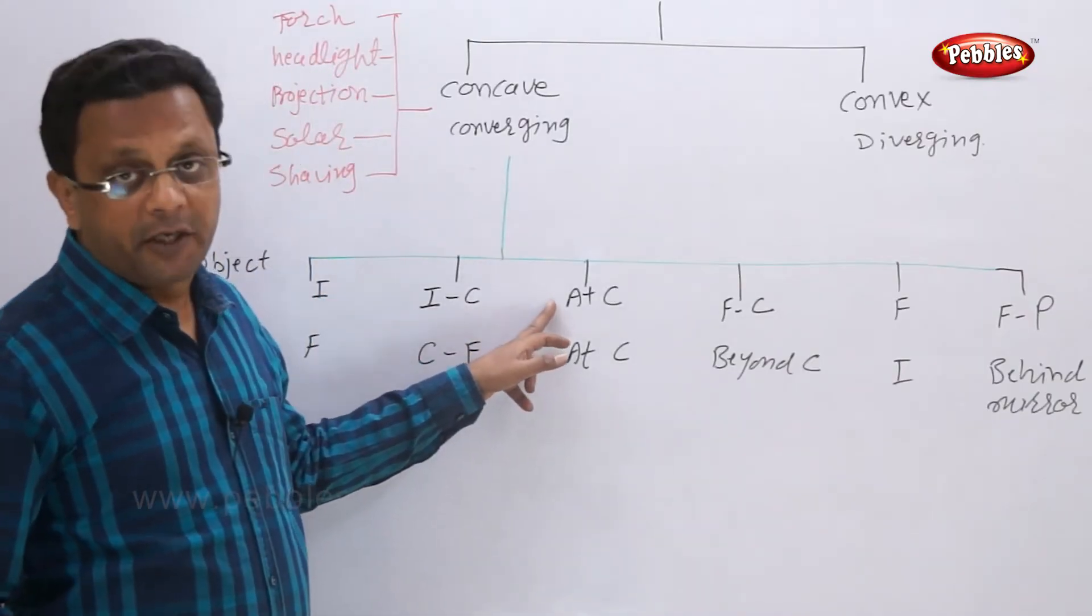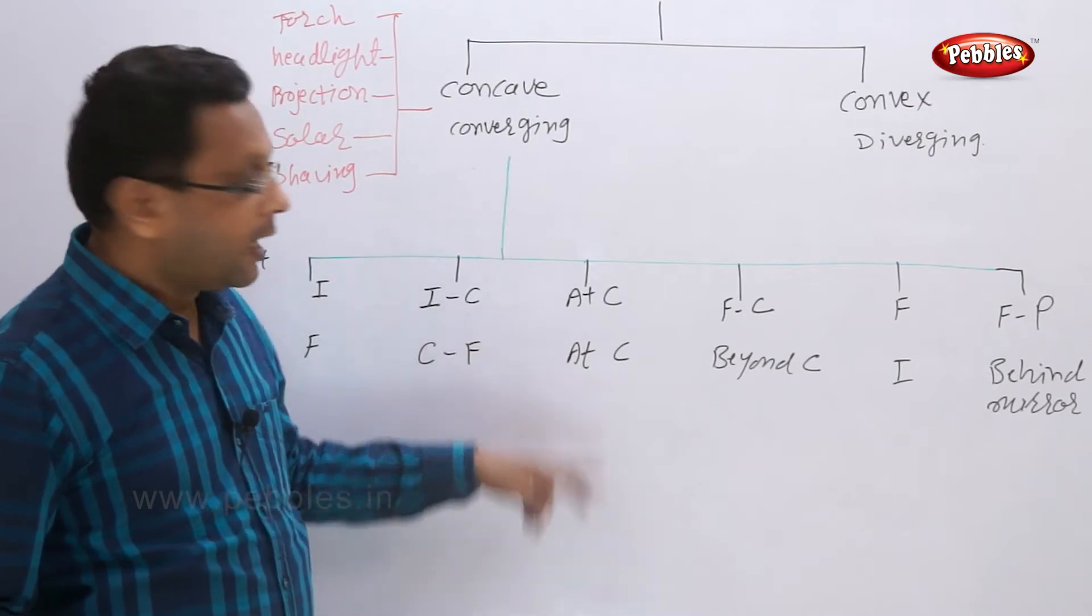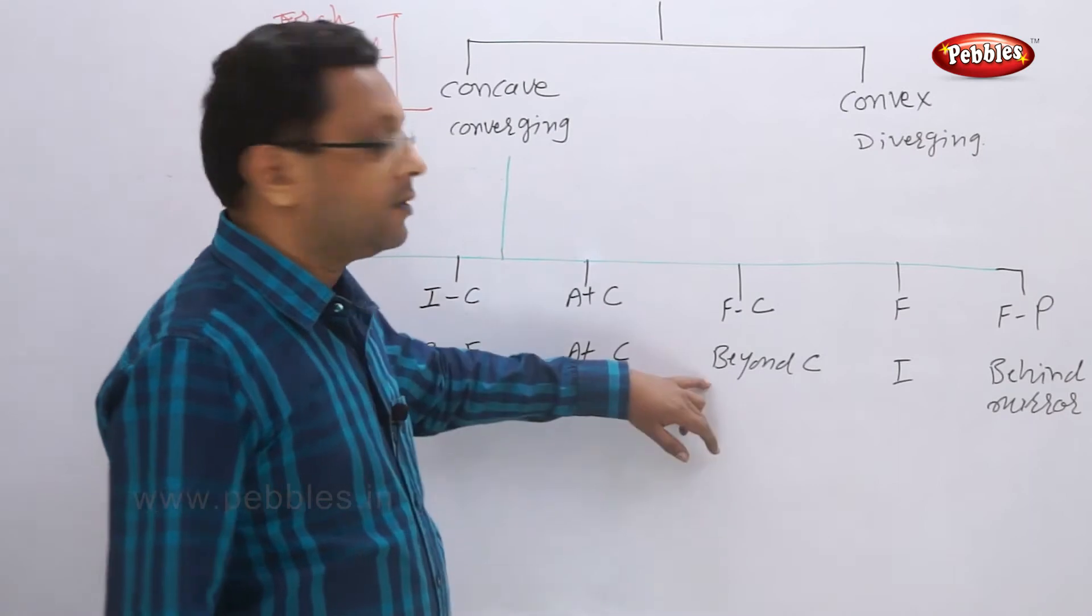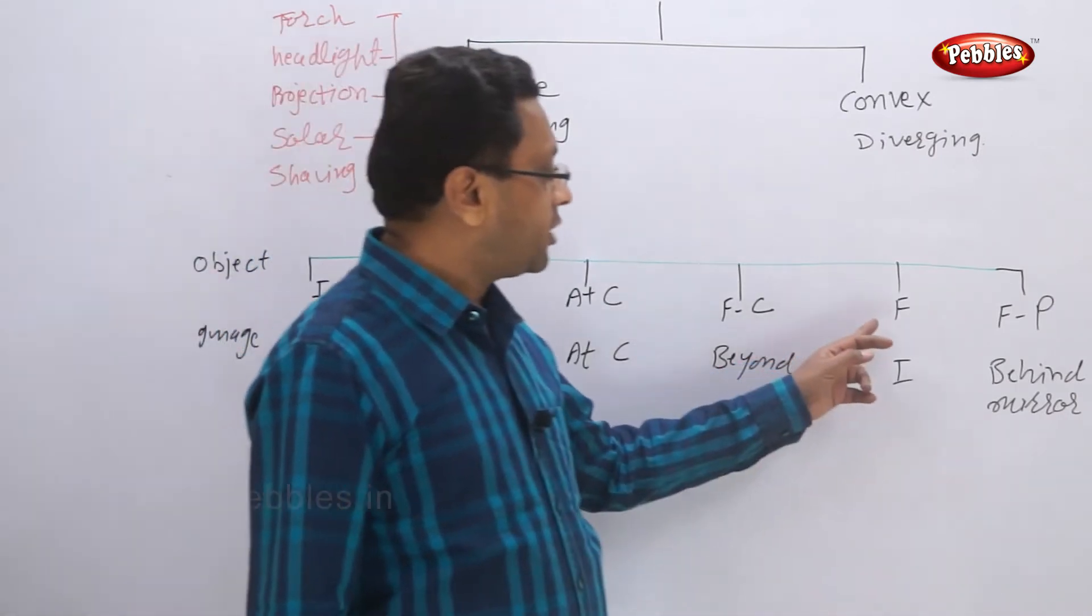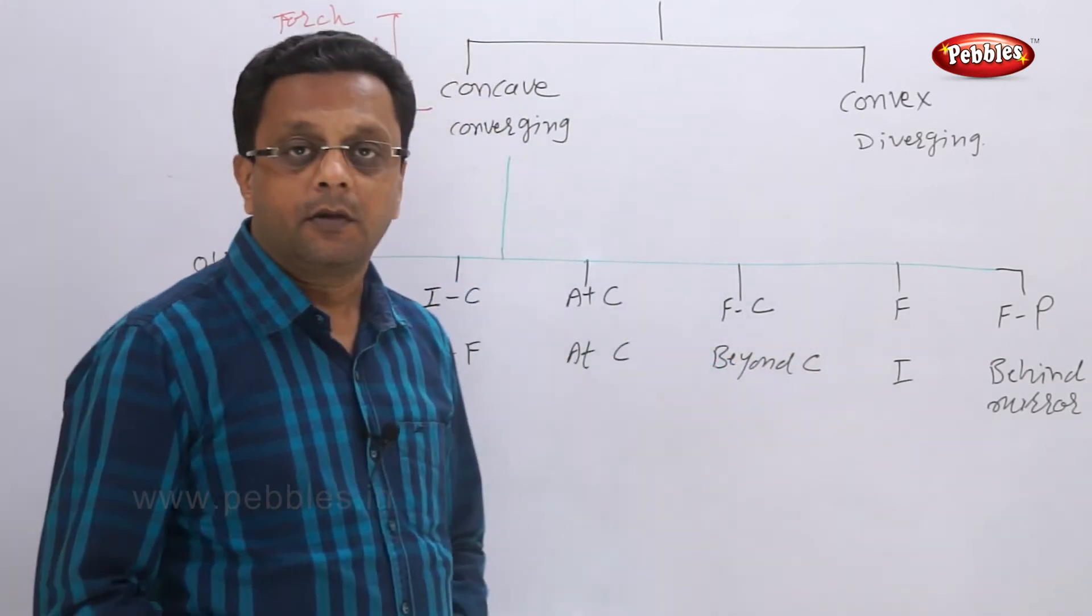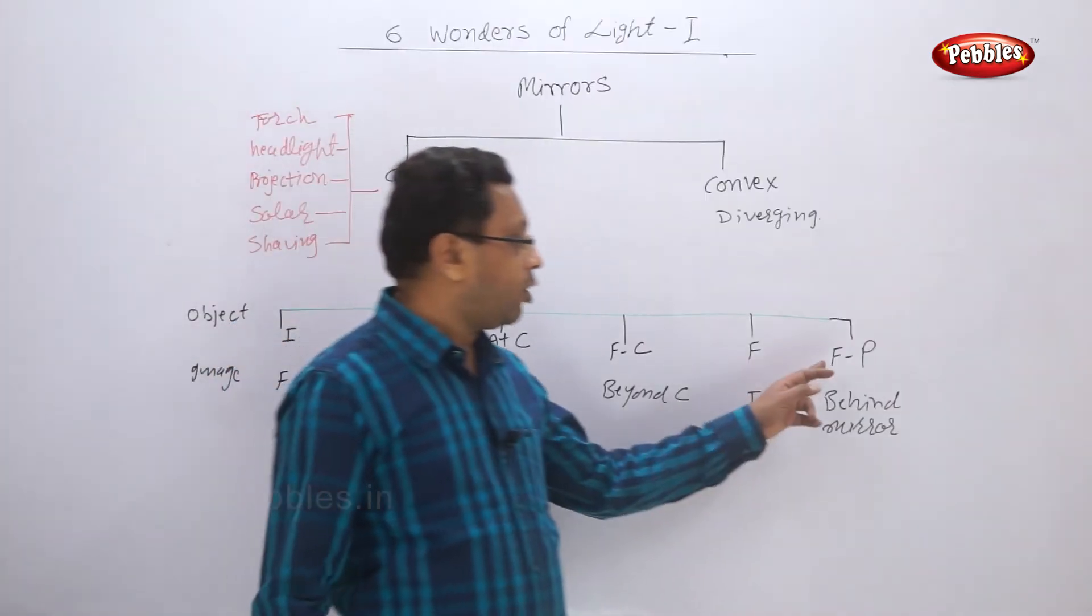When the object was at C, we got the image also at C. And when the object was between F and C, then the image was beyond C. When the object was at F, then the image was at infinity.